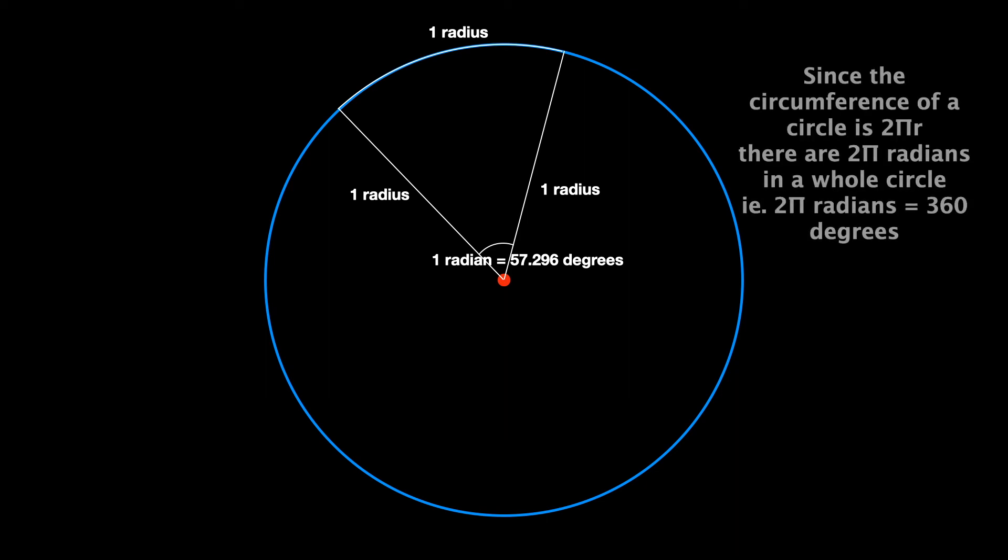Since the circumference of a circle is 2πr, it follows then that there must be 2π radians in a whole circle. That is, 2π radians is equal to 360 degrees. Thank you for watching.